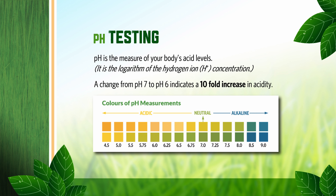pH is a logarithmic measure of the concentration of acidity. A pH change from 7, the neutral point, to 6 represents a 10-fold increase in acidity. The pH strips we are using have two measuring fields and they work especially well in the neutral to slightly alkaline range, where regular pH paper strips quickly turn gray and become illegible.